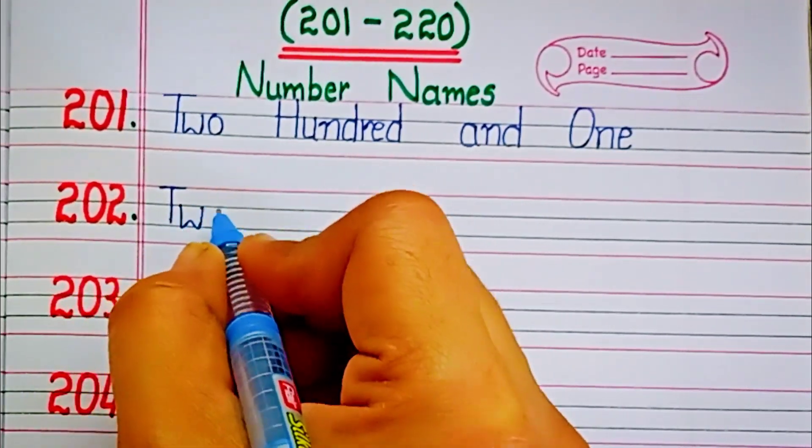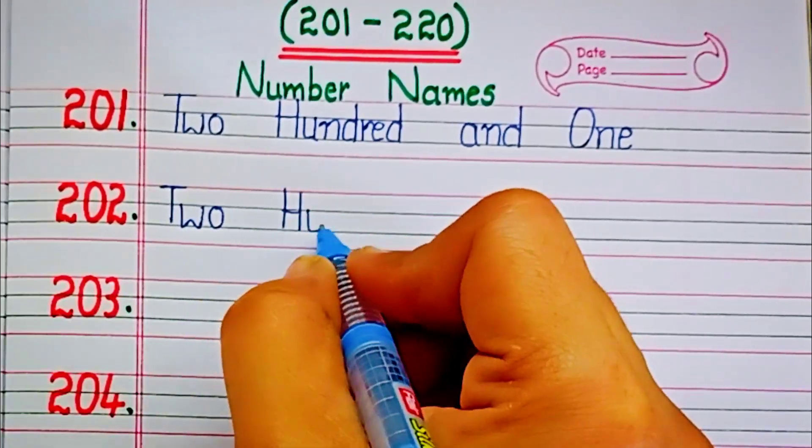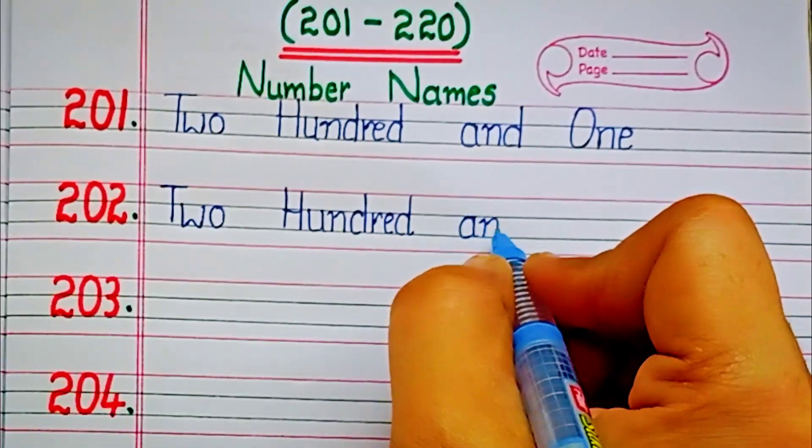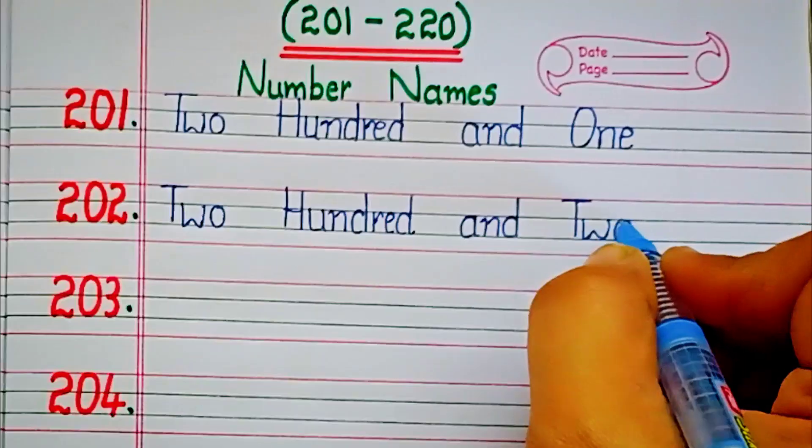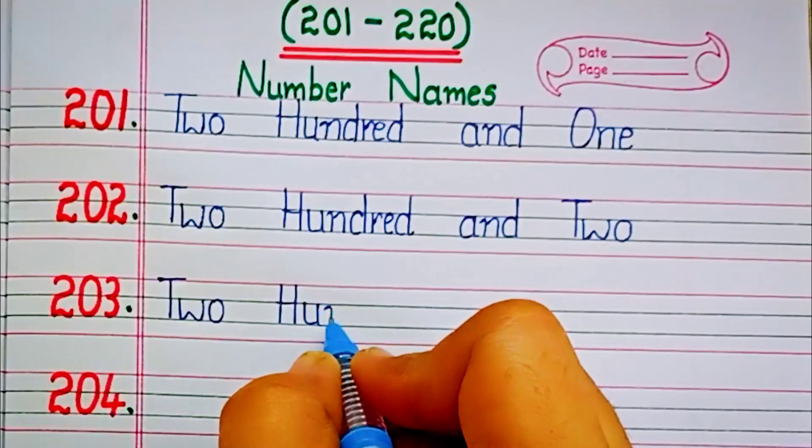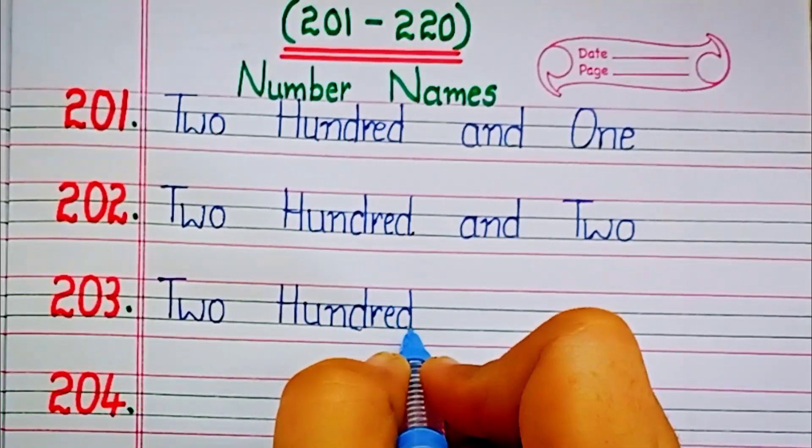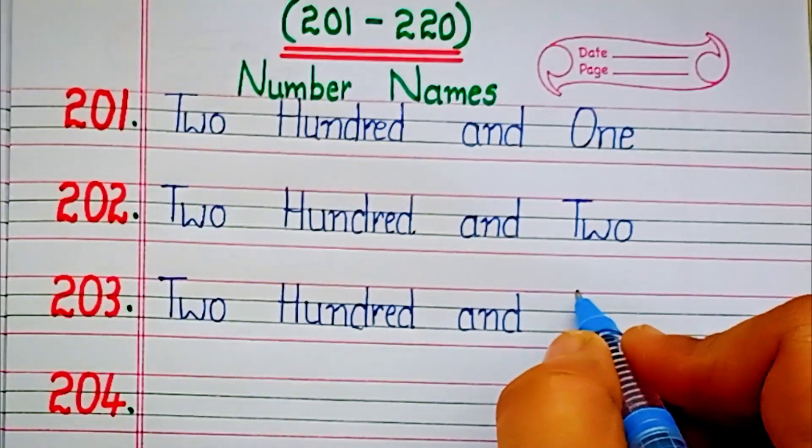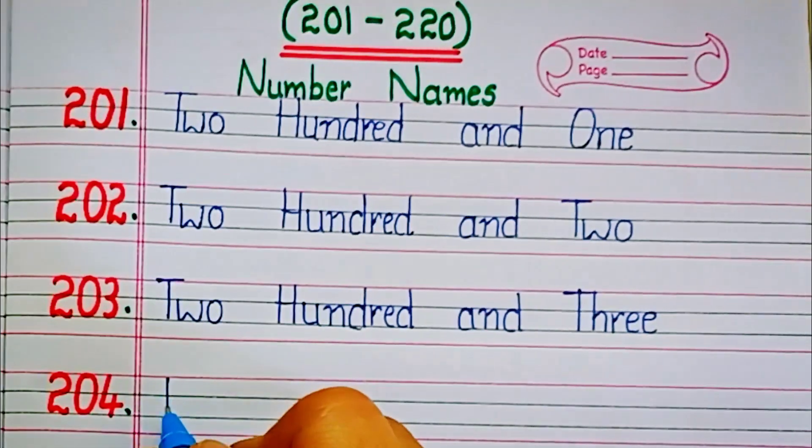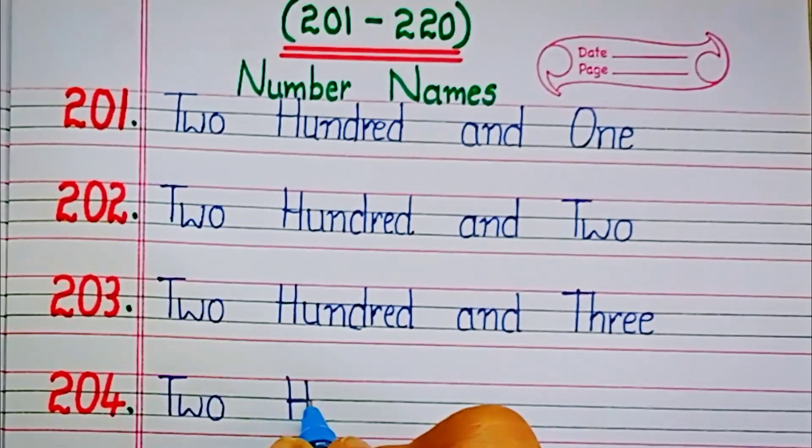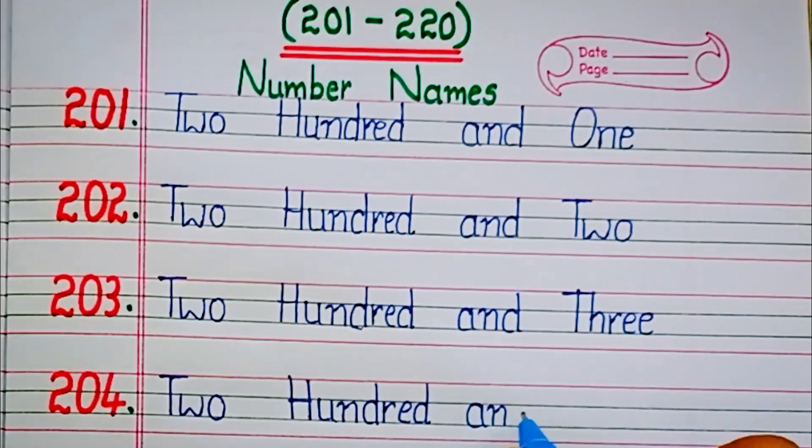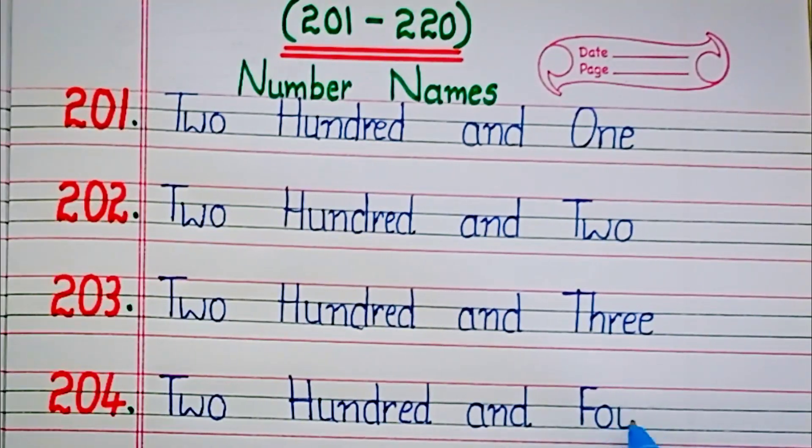201, 202, 203. 203, 204, 204. F-O-U-R, 4.